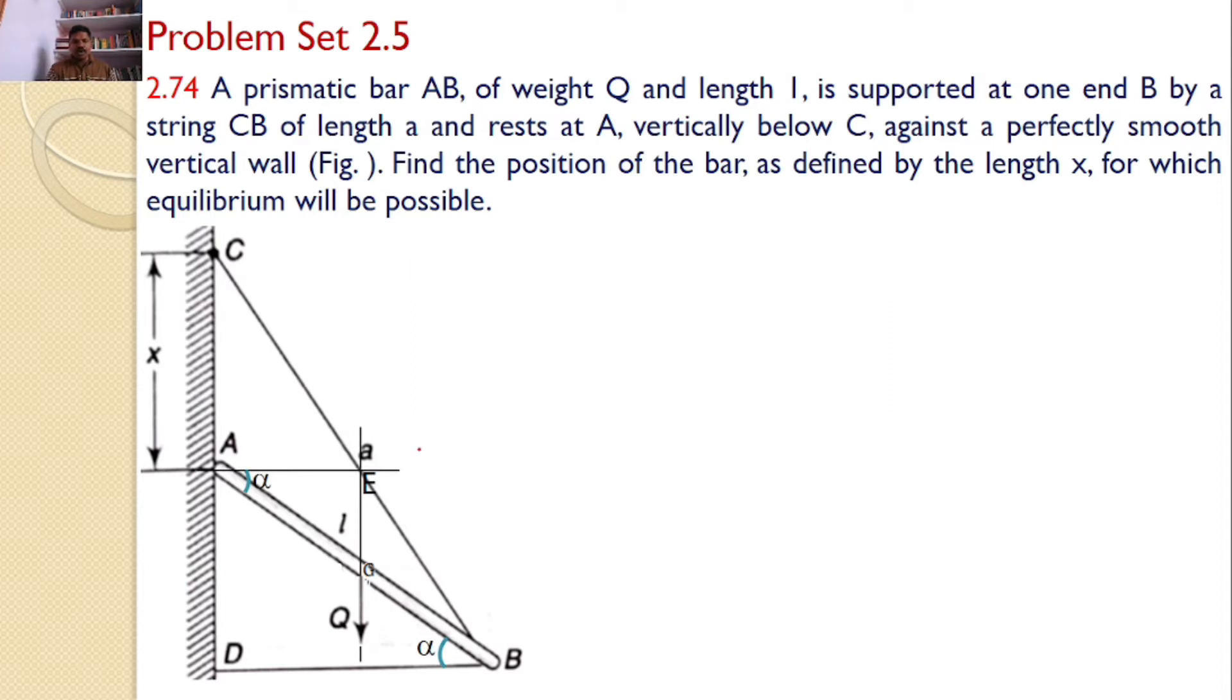So this is also more of a geometry problem. Now, the given problem is AB is a prismatic bar. It is supported by a string BC and A. Our interest is to find what is the value of x so that the body is under equilibrium.